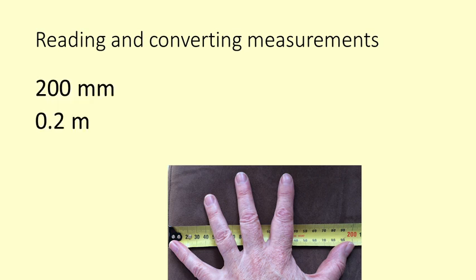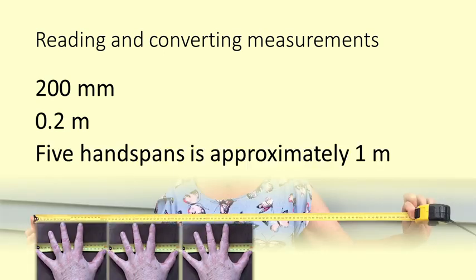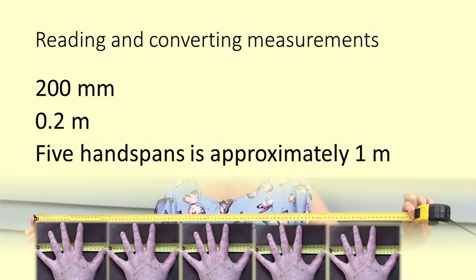200 millimetres, which is 0.2 of a metre. And it's useful to know that five handspans for most people is approximately one metre. So it's useful if you're trying to estimate things.